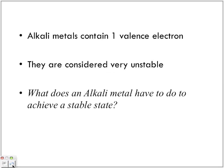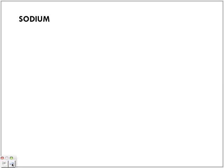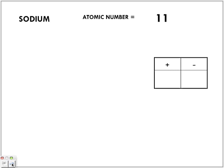Alkaline metals contain one valence electron. They are considered very unstable. So what does an alkaline metal have to do to achieve a stable state? It's only got one valence electron. We can tell that because alkaline metals are part of group one. So if they are in group one, one valence electron. Let's look at an alkaline metal in group one — sodium. The atomic number of sodium is 11, so we have 11 positives, which means we have 11 electrons, because we are looking at sodium as a neutral atom.